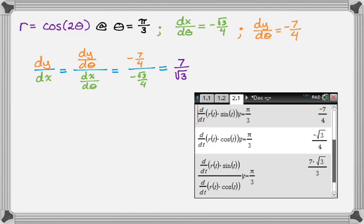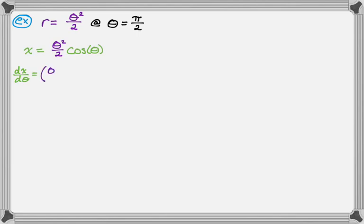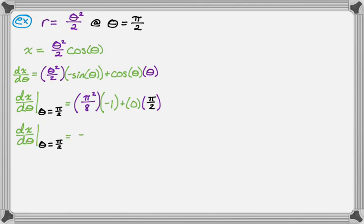Let's do one more example that some people find weirder because there's no trig function in the definition of r. I'll use r equals theta squared over two, evaluated at theta equals pi over two. Again, x equals r cosine theta, so we replace r right away and use the product rule to find dx/dθ. Pi over two is a nice value since sine equals one and cosine equals zero, so after substituting we get negative pi squared over eight.